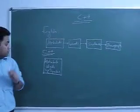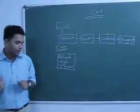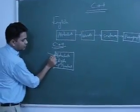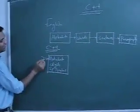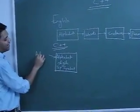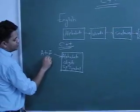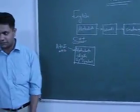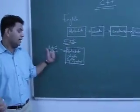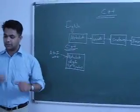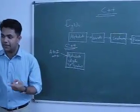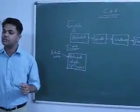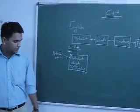I am going to explain each and every one. In C++, what comes under the category of alphabets? Capital A to Z and small a to z — all the alphabets. Alphabets are nothing different in C++. Capital A to Z is termed as alphabets, and small a to z is also termed as alphabets in C++.